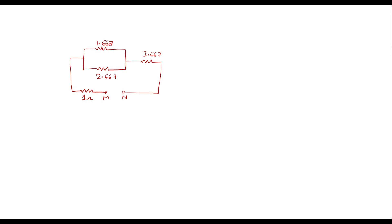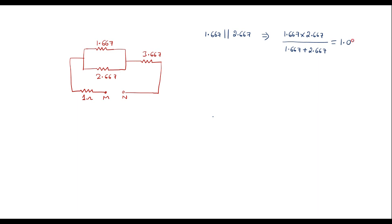Here we can see that 1.667 and 2.667 are in parallel. The equivalent value is (1.667 × 2.667) / (1.667 + 2.667). If two resistors are in parallel, the equivalent value is the product divided by the sum. Solving this gives 1.0258 ohm.